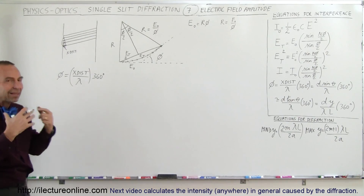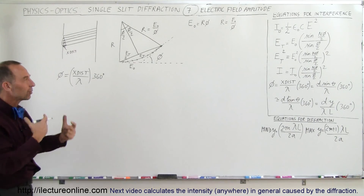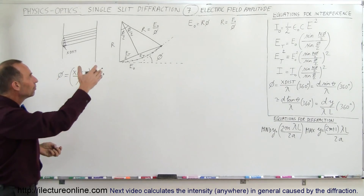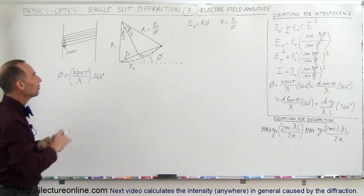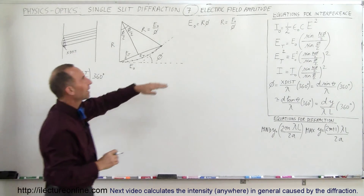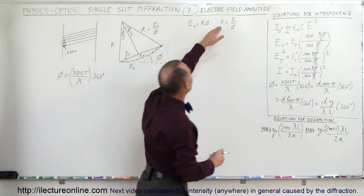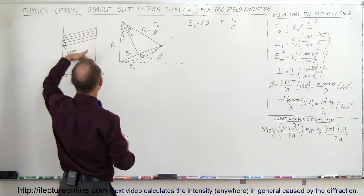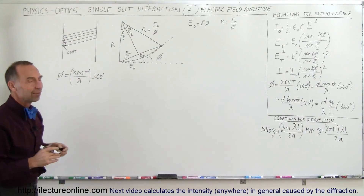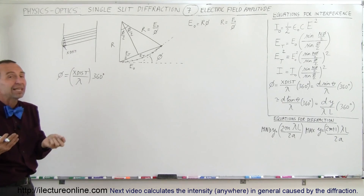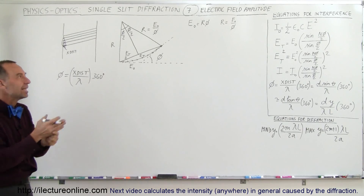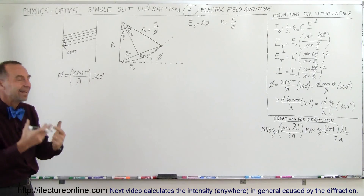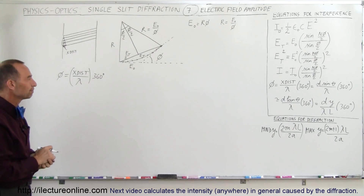We now need to mathematically find some relationship between the angle phi and the phase difference. From that, we can find the electric field amplitude of a beam anywhere along the screen on the other side, because ultimately it's using the electric field amplitude that we need to find the intensity of the beam anywhere along the screen.